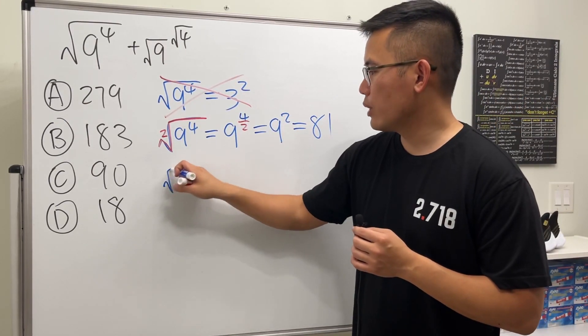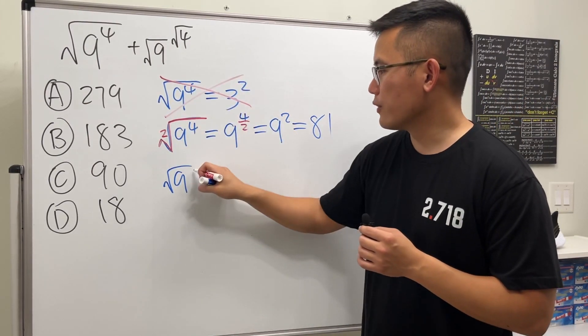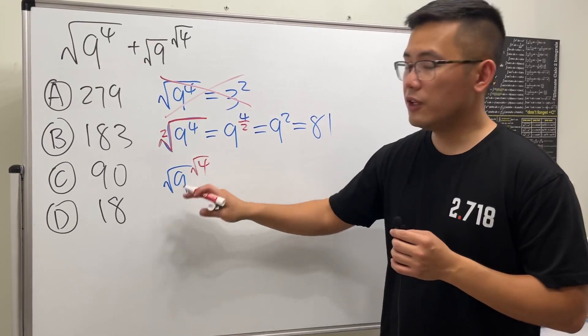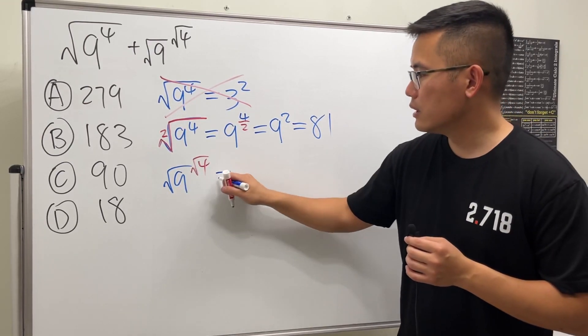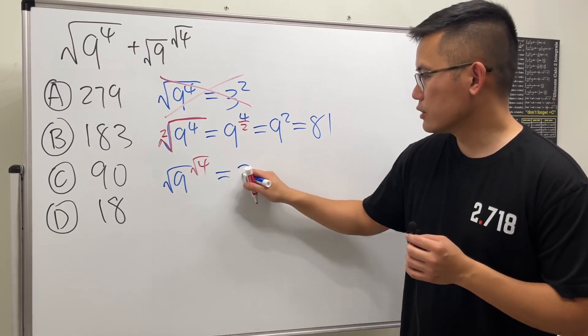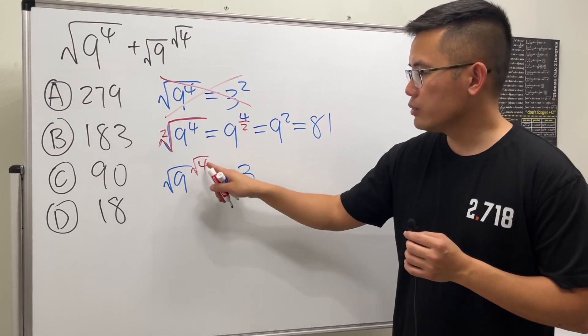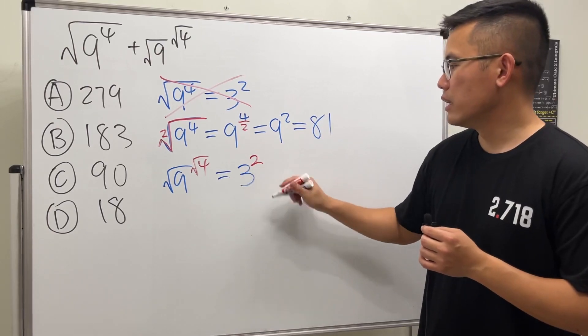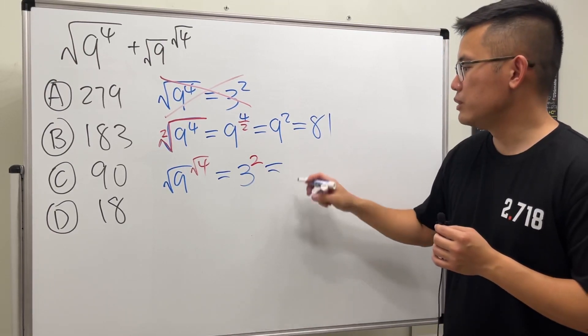If we have square root of 9 raised to the square root of 4, this is two different square roots. So you do those first. Square root of 9 is 3, and square root of 4 is 2. Then work that out: 3 to the 2nd power is 9.